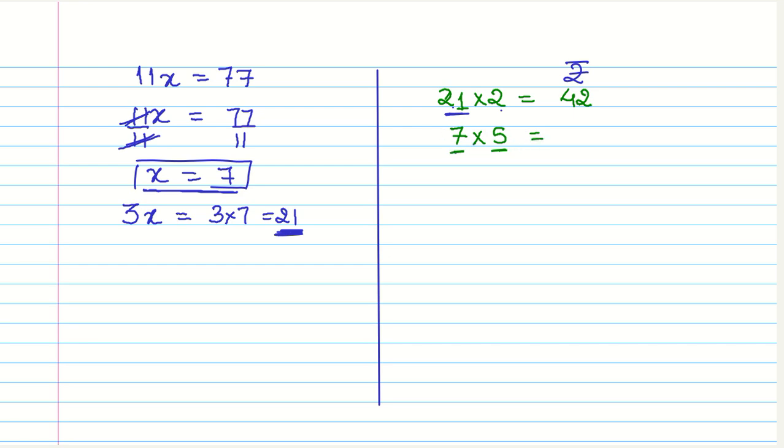And the amount that he has from five rupees is seven multiplied by five. This is the number of five rupee coins. So seven times five is 35. And when we add this together, we get a total of ₹77. So we know that the amount that we have got, that is the number of two rupee coins and the number of five rupee coins, is correct.